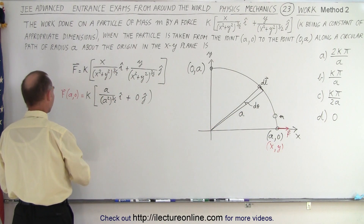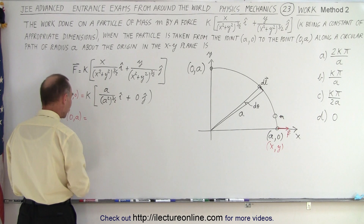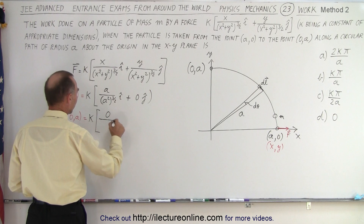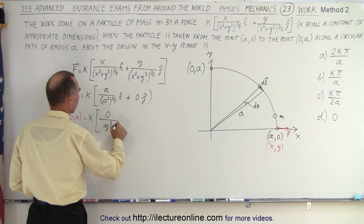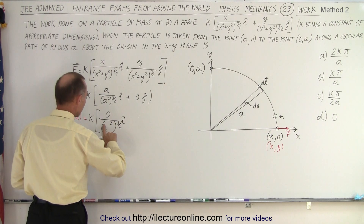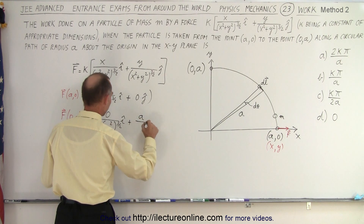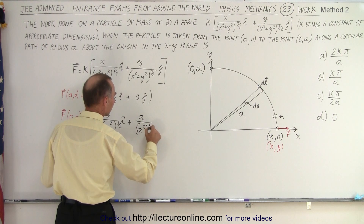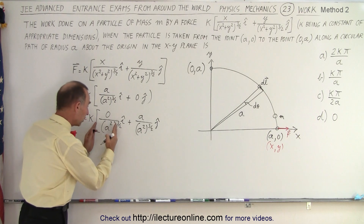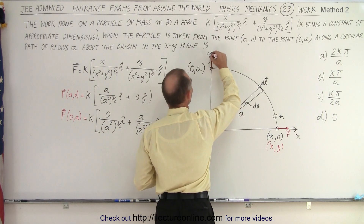Now let's calculate the force at point 0A. Here x equals zero, so the i-direction term is zero divided by (y²) to the three-halves power. With y equal to A, we get A over (A²) to the three-halves power in the j direction. So there is no component in the x direction and only a component in the y direction — the force points upward at this location.